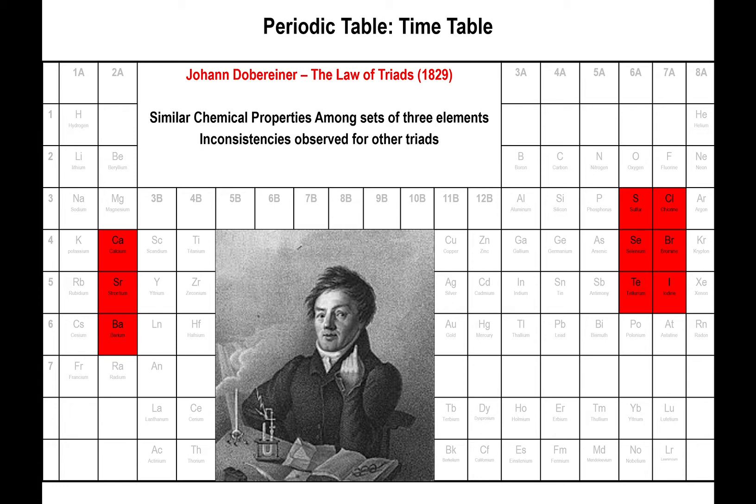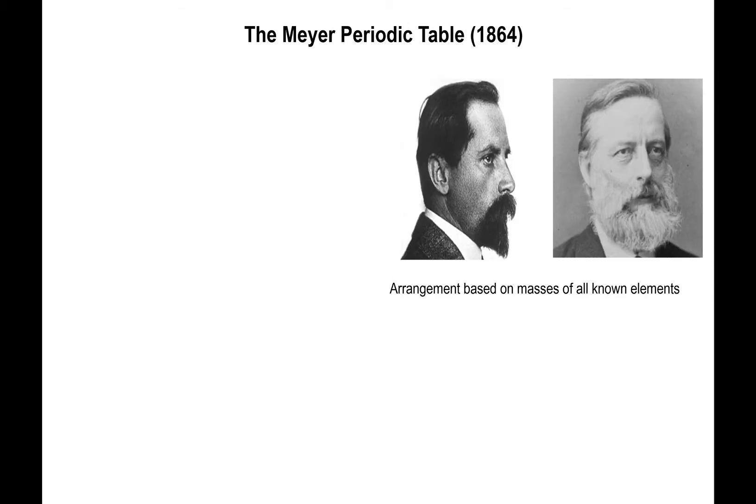But there were other groups of three elements that kind of behaved as such, but didn't quite fit the criteria. So there were inconsistencies present at the time, making this more of an observation than a rule.